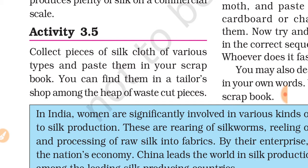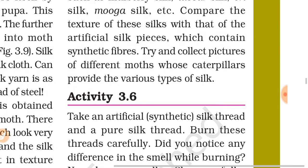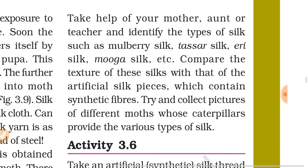You have to collect pieces of silk cloth of various types and paste them in your scrapbook. You can find them in a tailor's shop among the heap of waste cut pieces. Take help of your mother, aunt, or teachers and identify the types of silk such as mulberry silk, tassar silk, aris silk, mooga silk, etc. Compare the texture of these silks with that of artificial silk pieces which contain synthetic fibers. Try to collect pictures of different moths whose caterpillars provide the various types of silk.